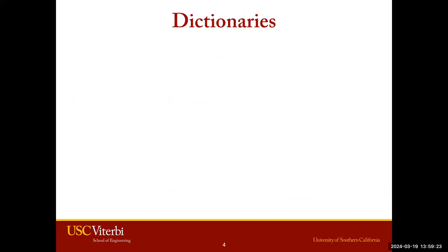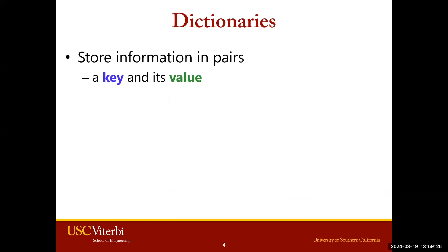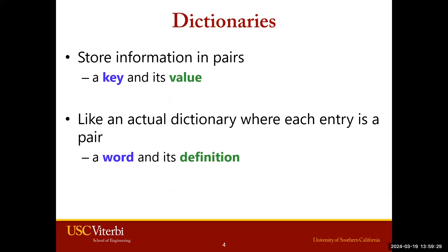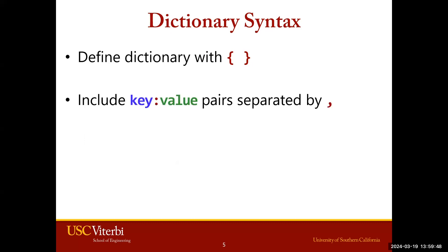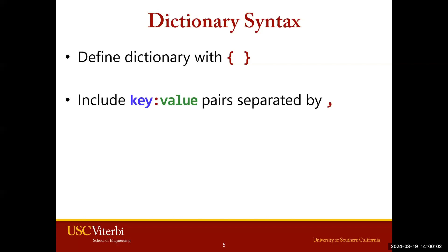Now let's take a look at dictionaries. Let's take a look at the key and its value. Think of it like an actual dictionary, where each entry is a pair with the word being the key and the definition being the value. Dictionaries are defined by curly braces — note that dictionaries use curly braces, whereas lists use brackets. Within the curly braces, you'll provide key-value pairs, with the key and value separated by a colon. Pairs within the dictionary will be separated by commas.